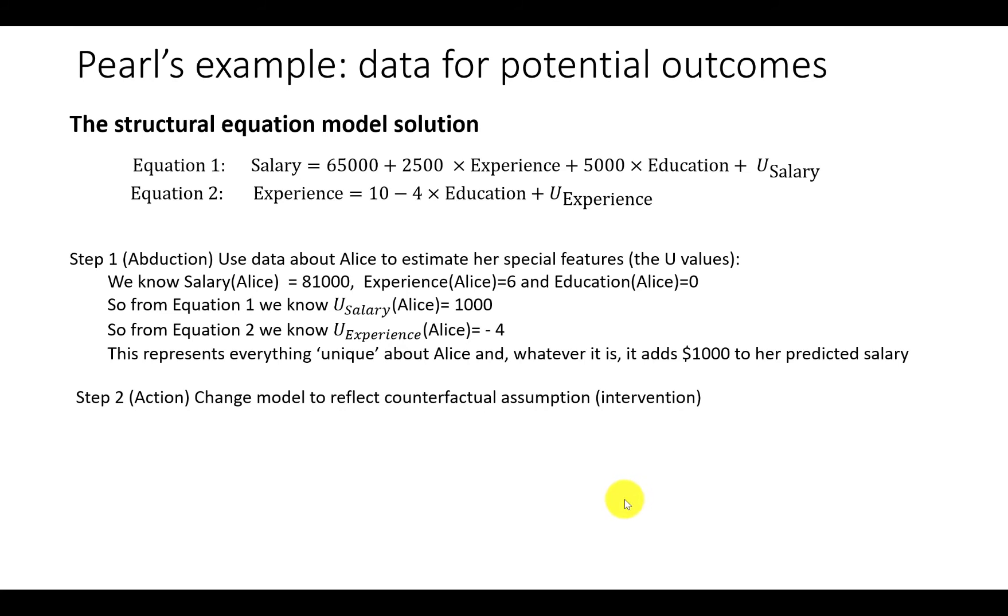Step two is the action step, where we change the model to reflect the counterfactual assumption, which in this case is the intervention of assigning education equal to one.